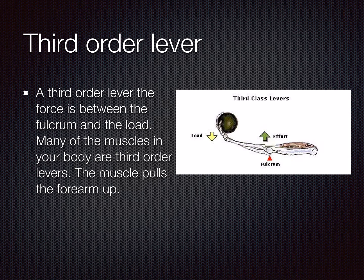A third order lever — and we don't really need to know this one for our project in class, but it's nice to know it anyway. A third order lever is where the force is between the fulcrum and the load. For example, if you have a ball in your arm and your arm is out straight and then you bend your arm, the fulcrum is in your elbow, the effort comes from your bicep or your muscle, and the load is in your hand. So you can see the difference between the three.